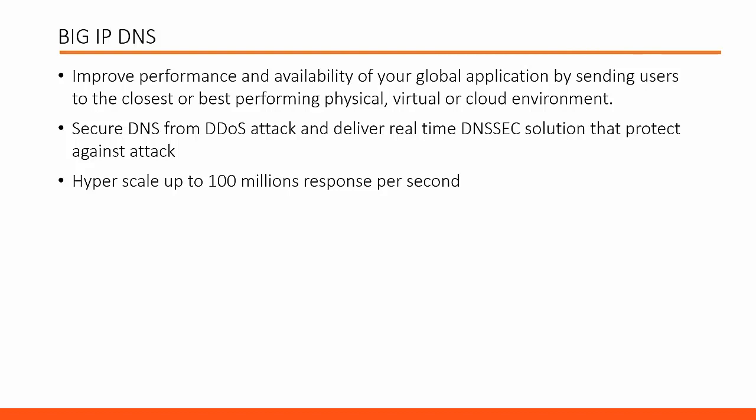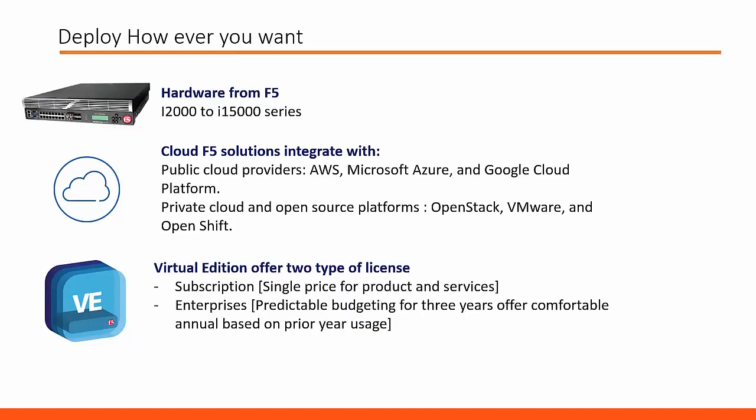Big IP DNS can hyperscale up to 100 million responses per second, which helps meet your growth through Big IP. You can deploy F5 as a hardware appliance, virtual edition, or cloud.